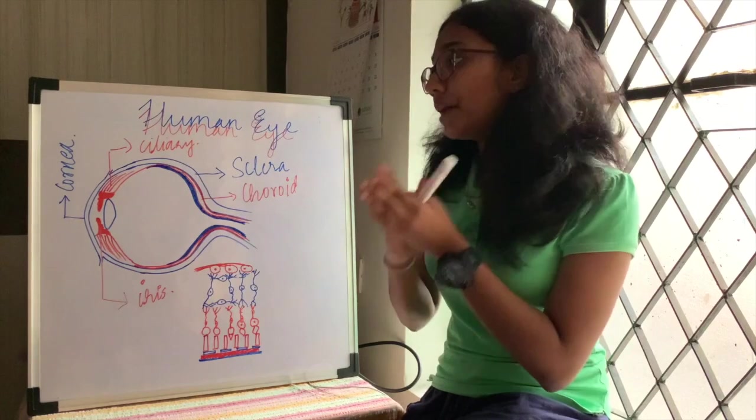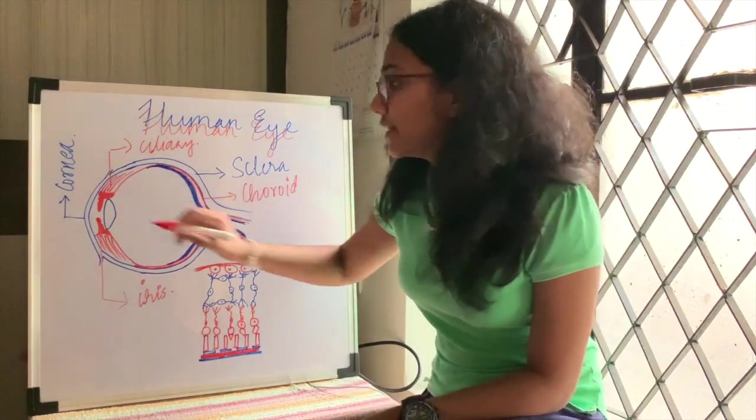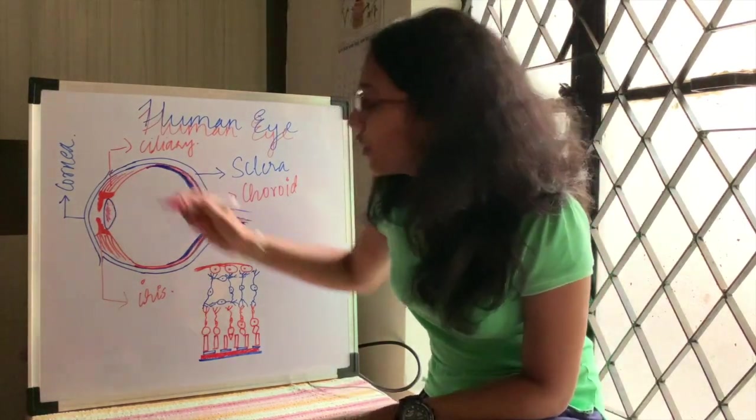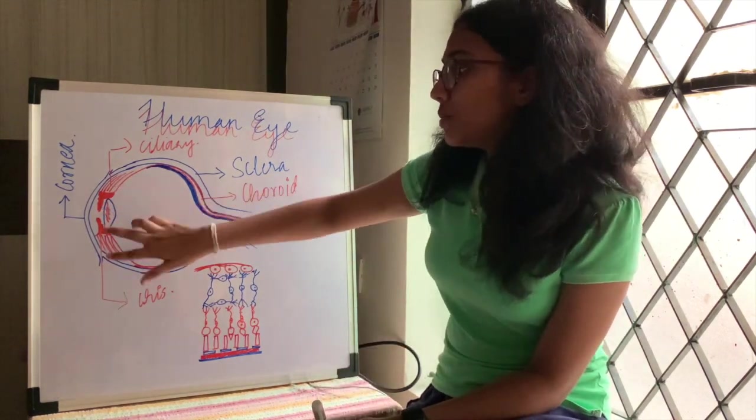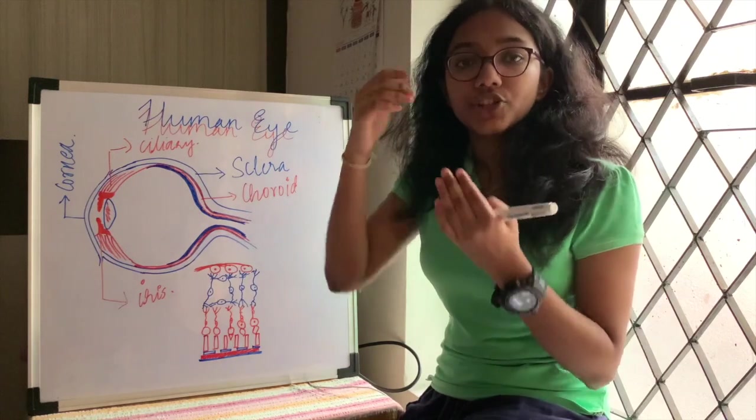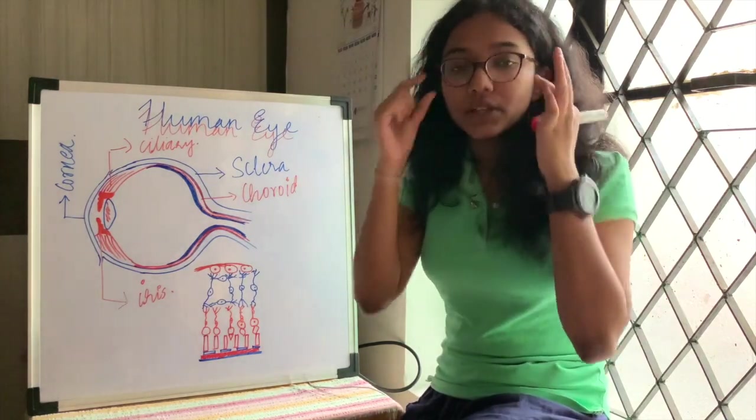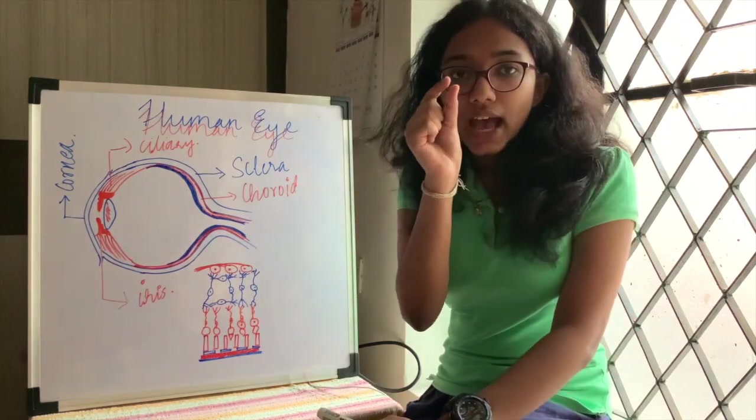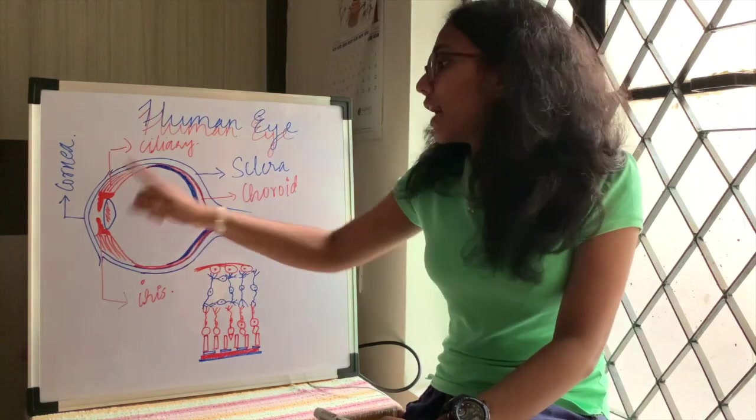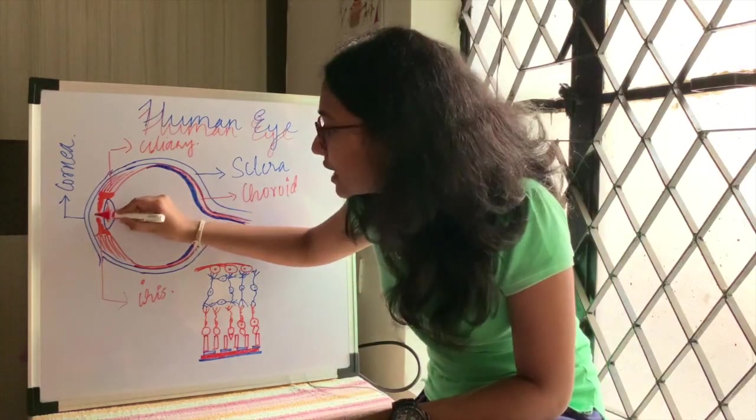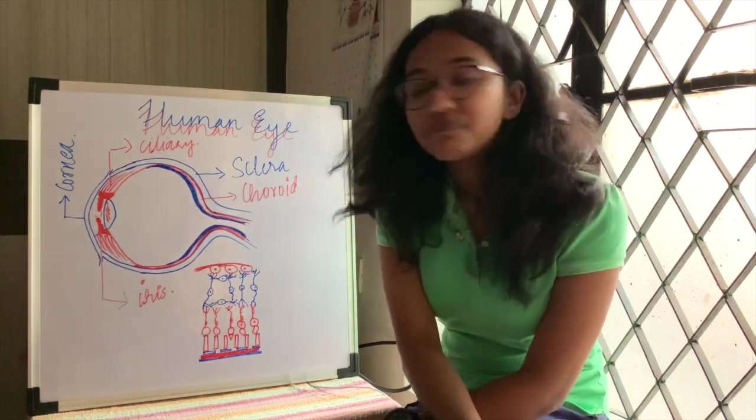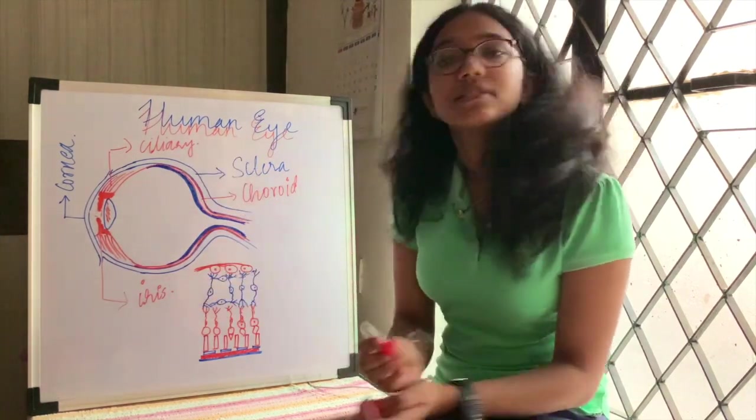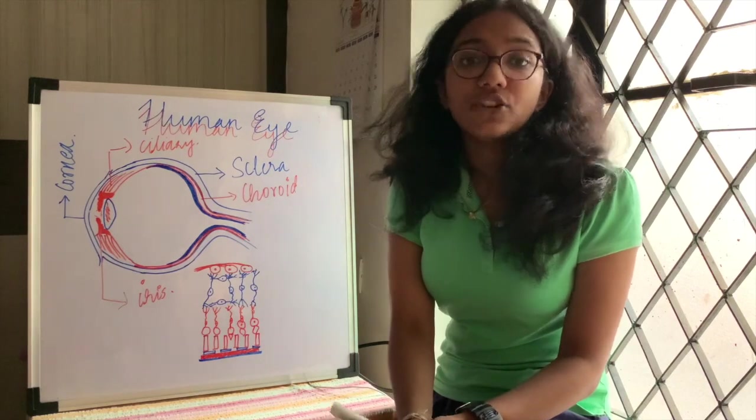We know the function of ciliary and iris muscles: they help in maintaining the aperture of the lens. Now let's talk about pupil. These two muscles help in maintaining the aperture or the diameter of our pupil, and pupil is the gap through which light enters our lens. This gap you are seeing here is known as our pupil. Ciliary and iris muscle control the diameter of pupil.